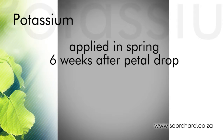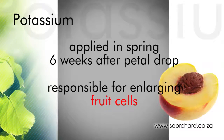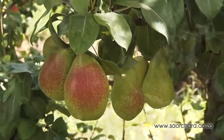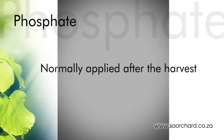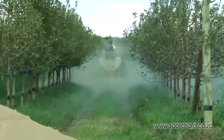Potassium is normally given in spring, usually also six weeks after petal drop. It is taken up by the plant very quickly and is responsible for enlarging the cells in the fruit, making it a very important element for achieving large fruit on the tree. Phosphate stays in the soil for a long time, so application time is not terribly important — it is normally applied post-harvest. Liming, the process that supplies calcium to the soil, is done in winter.